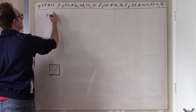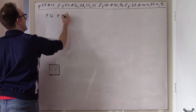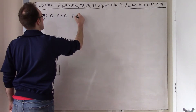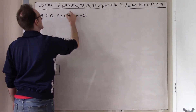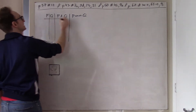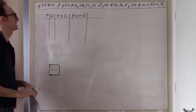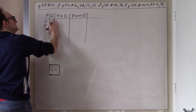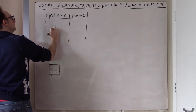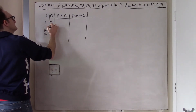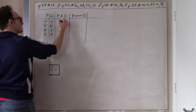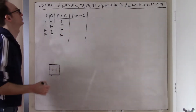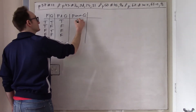What is NAND? Well, we can do P AND Q. And NAND — I'm just going to call it NAND — is just the negation of P AND Q. The truth table for AND is: true, false, false, false. And the truth table for NAND, therefore, is the negation of this: false, true, true, true.